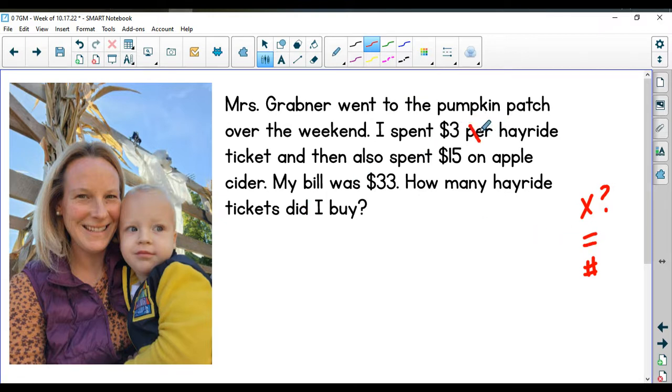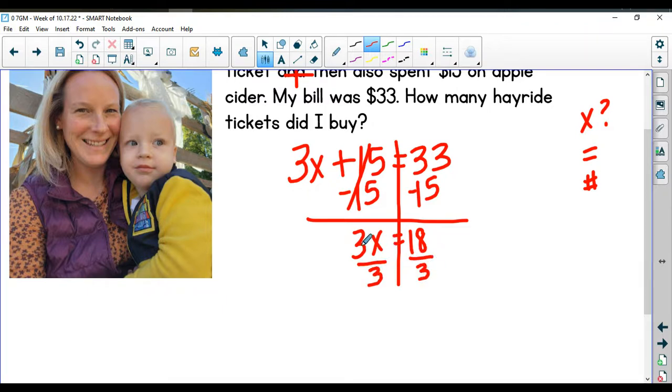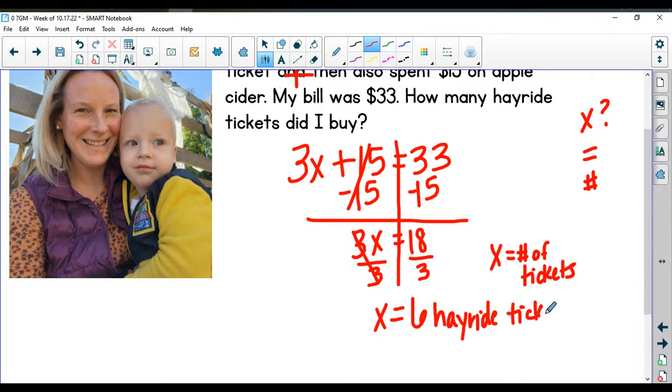So the $3 per hayride ticket is going to get your x, so that's going to be 3x, and the $15 on the apple cider gives us the total bill of equaling $33. So when I drop my line down my equal sign, I'm going to subtract 15 on both sides. That'll leave me with 3x is equal to 18. So dividing through by 3 on both sides to get x all by itself, I'm going to get x is equal to 6. Keep in mind, the question said, how many hayride tickets did I buy? So x represents the number of tickets that I bought. So x is equal to 6 hayride tickets.